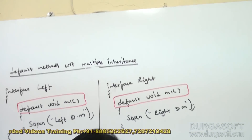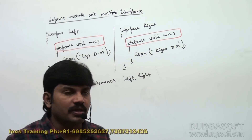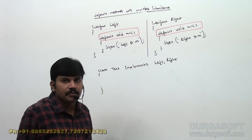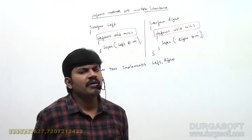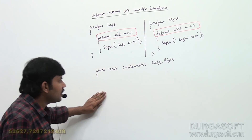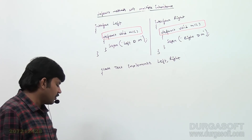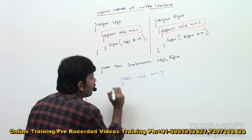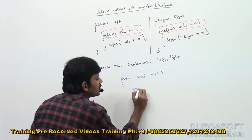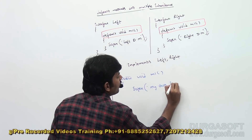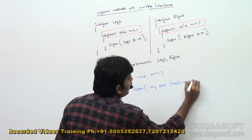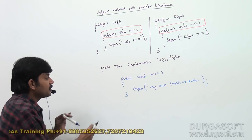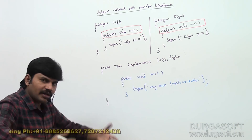So in the case of default methods there may be a chance of an ambiguity problem. If two interfaces contain the same default method, then in the implementation class there may be an ambiguity problem. How can we solve this? Very simple — in the implementation class, override this method based on your requirement. For example: `public void m1() { System.out.println("My own implementation"); }`. I am providing a completely new implementation.